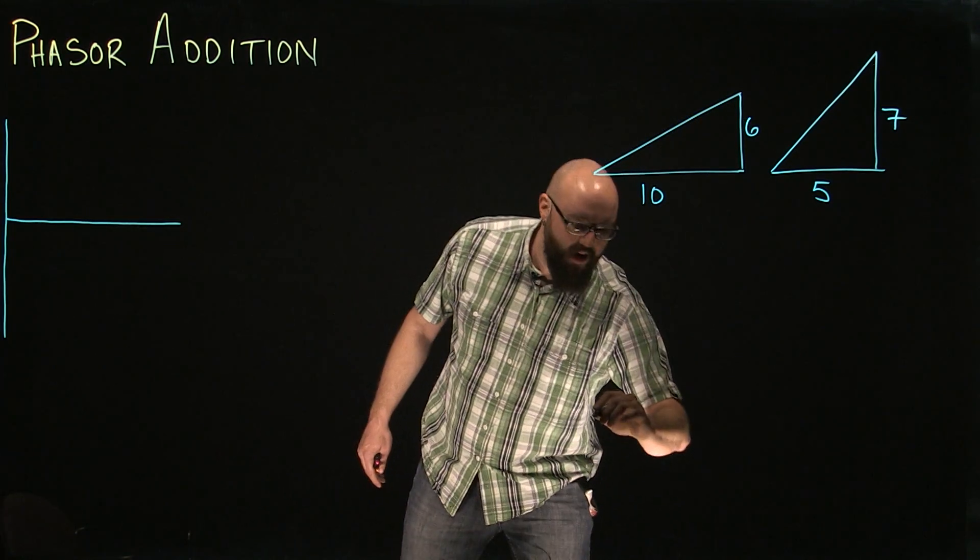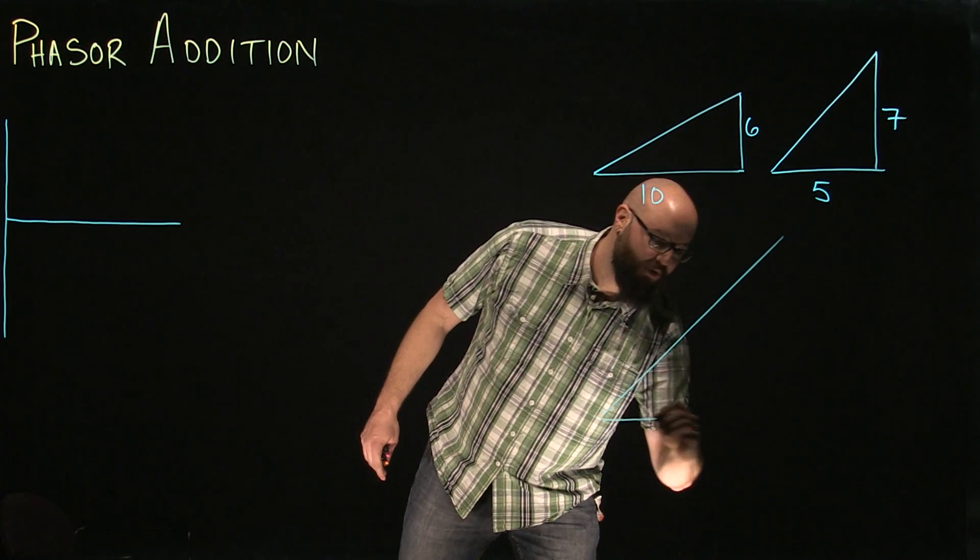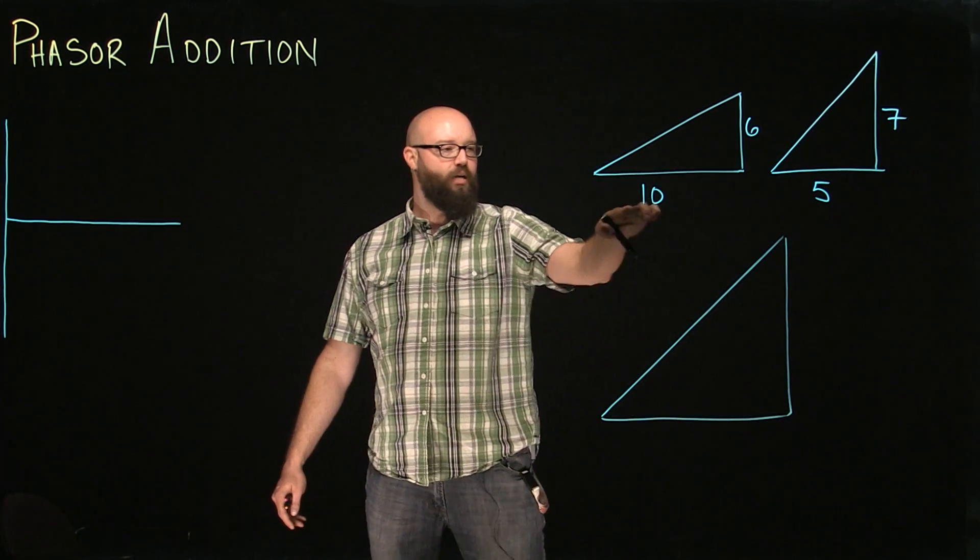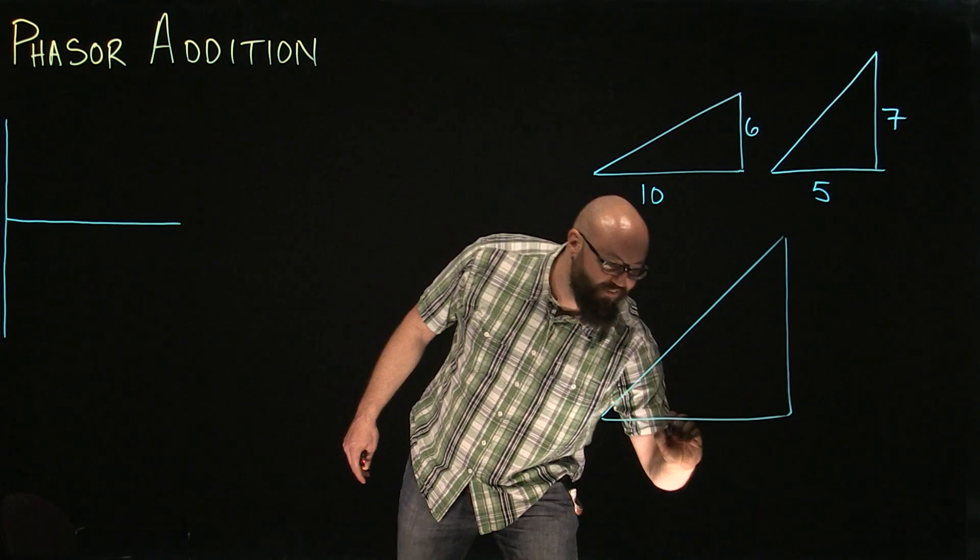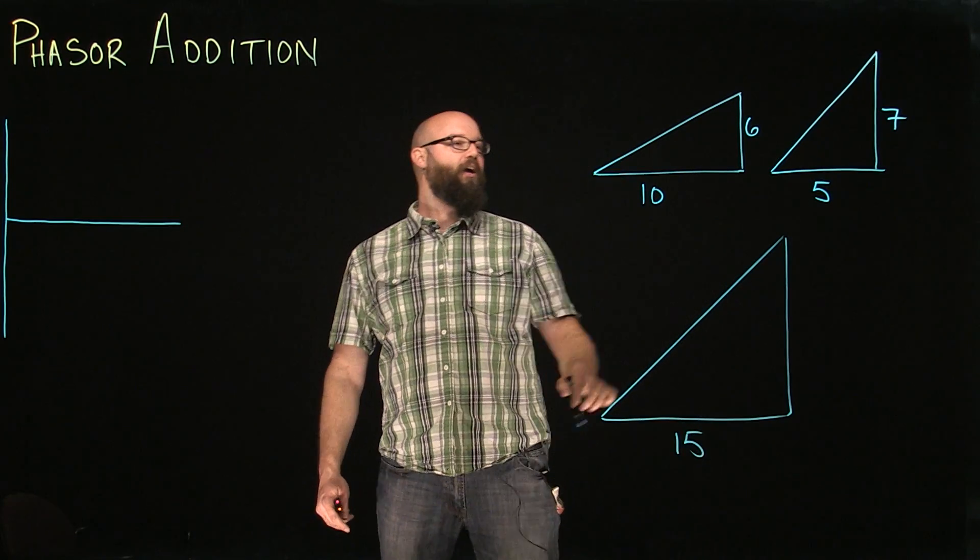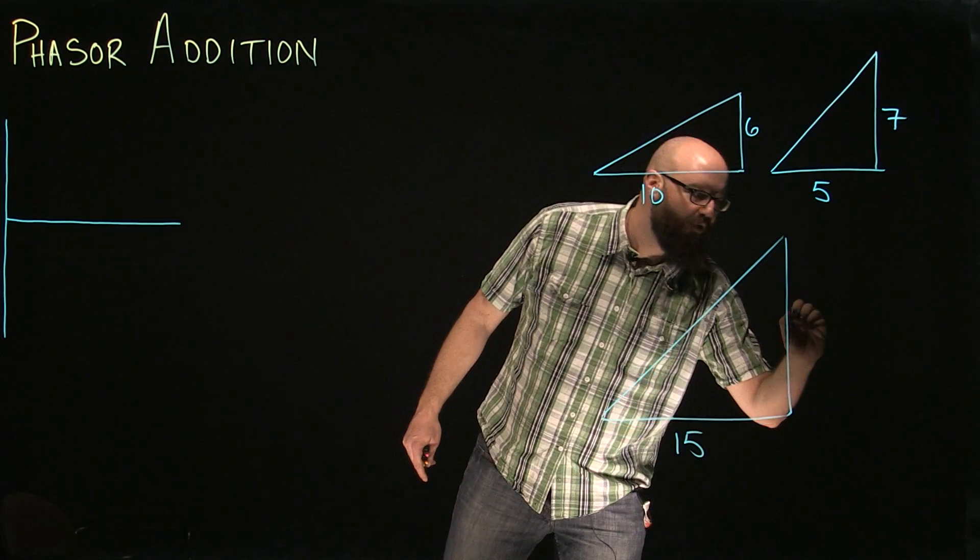So, if we create our super triangle here, our resultant triangle, we should see a total horizontal of 15. We should see a total vertical of 13.